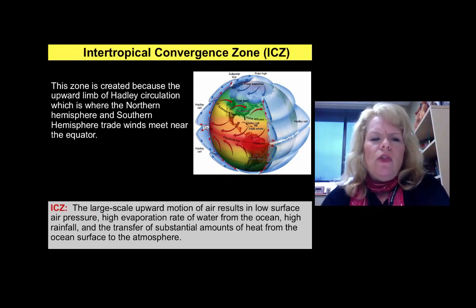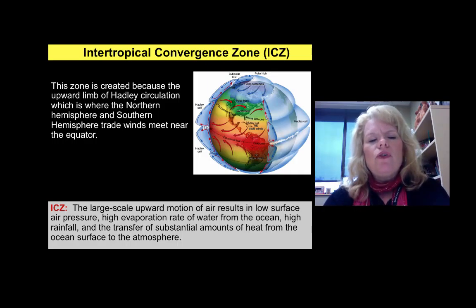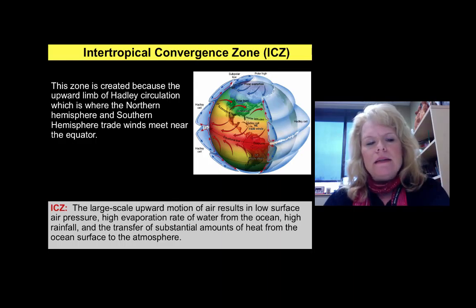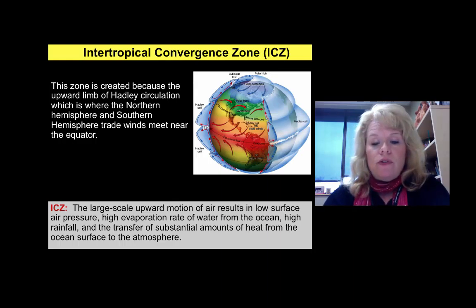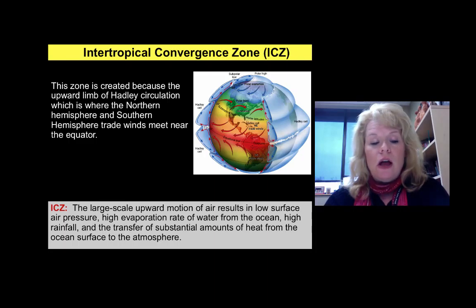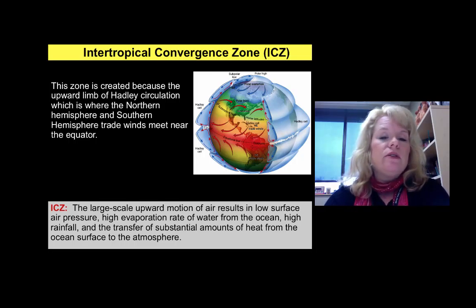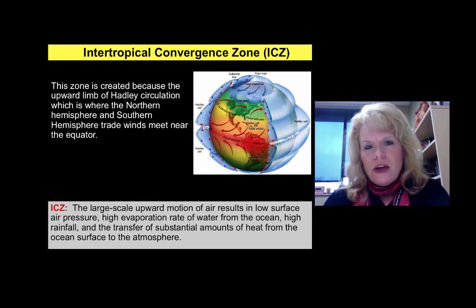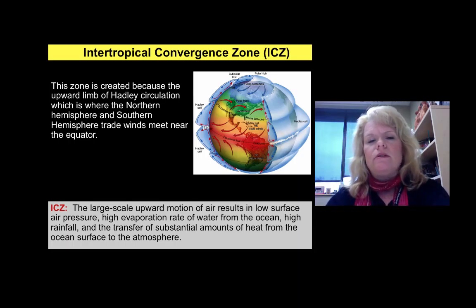There's another region called the Intertropical Convergence Zone, or ITCZ. This is created because the limb of the Hadley circulation — where northern and southern hemisphere trade winds meet — occurs near the equator. This results in high evaporation rates from the ocean, high rainfall, and substantial transfer of heat from the ocean surface to the atmosphere. You constantly have rain-like events there, so there are low-pressure systems as opposed to the high-pressure systems of the Hadley cells.